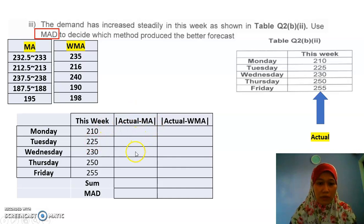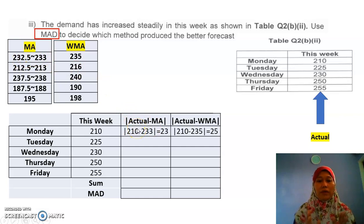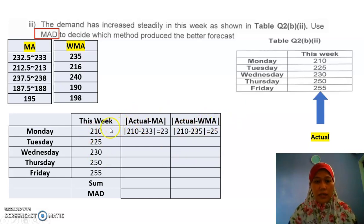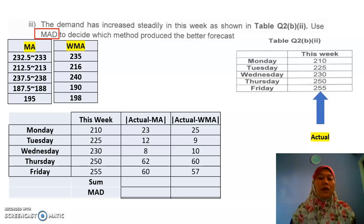First I will do the moving average error: take the actual minus the moving average forecast. Remember, for error we need to use absolute value, so there are no negative values — all are positive. Same goes for the weighted moving average: take the actual and subtract the forecast. Since this is absolute value, there's no negative number. Complete the error for Tuesday, Wednesday, Thursday, and Friday, then sum all the errors for both moving average and weighted moving average.